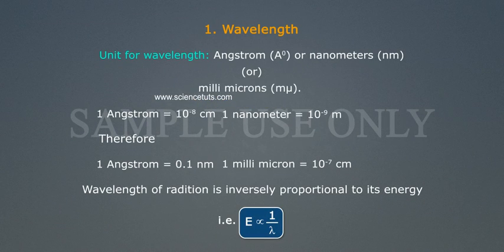Unit for wavelength: Angstrom (Å) or nanometers (nm) or millimicrons (mμ). 1 Angstrom is equal to 10^-8 cm.